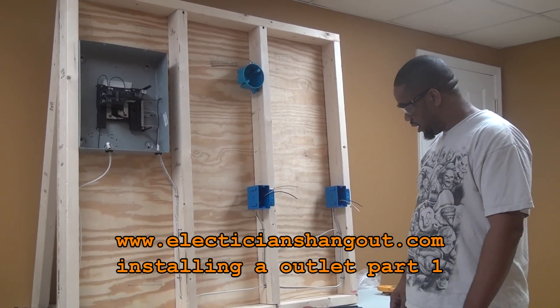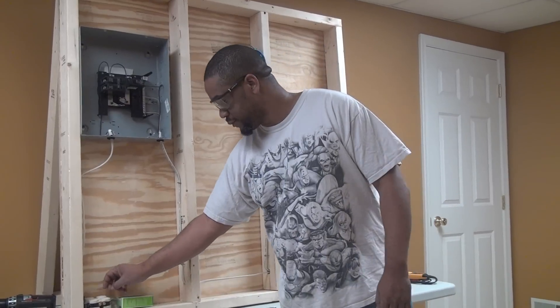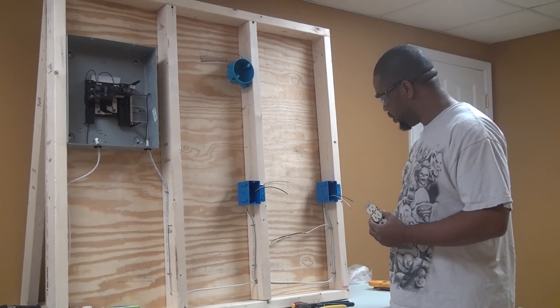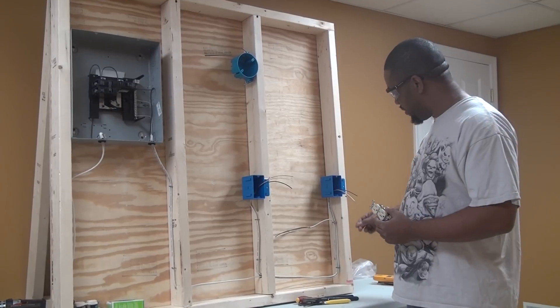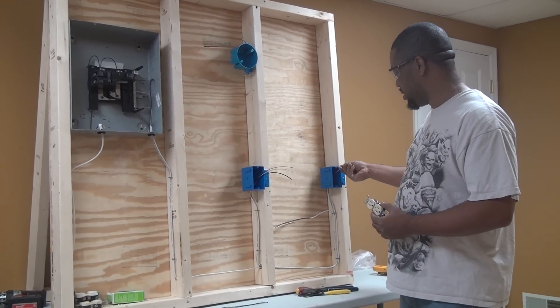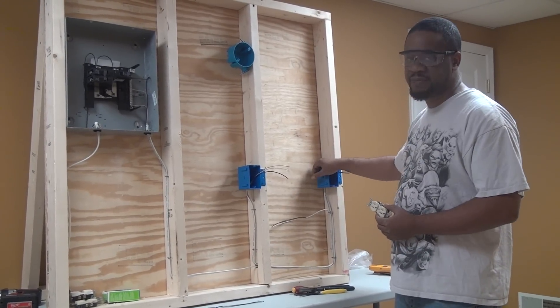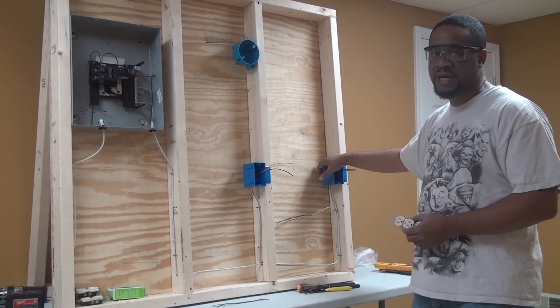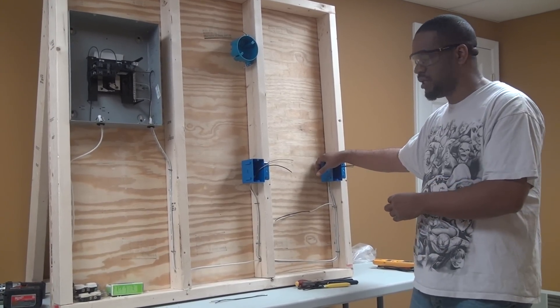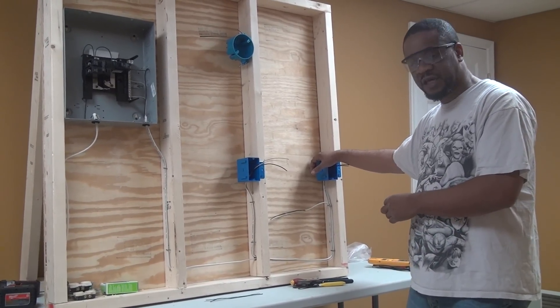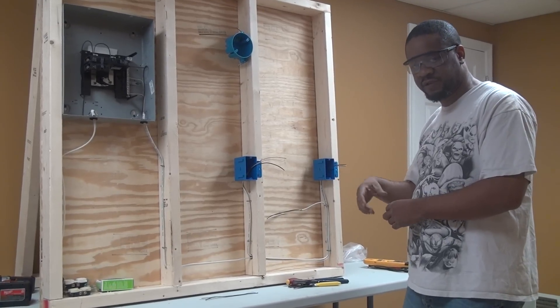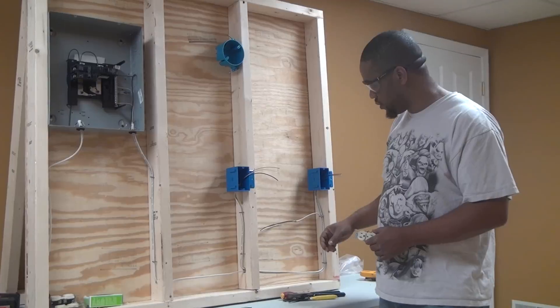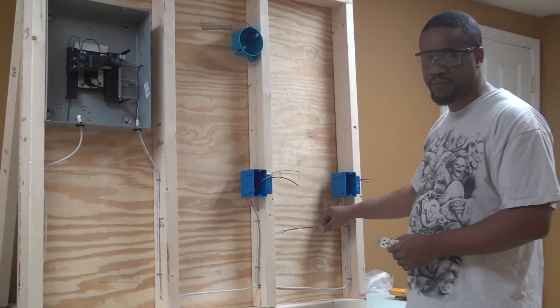Today we're going to install an outlet. I'm going to show you how to install an outlet into a plastic box. I'm going to do a different tutorial on installing outlets in metal boxes because things are a little bit different. There's a few extra steps you have to take and the material that you use other than the Romex. The Romex is universal.